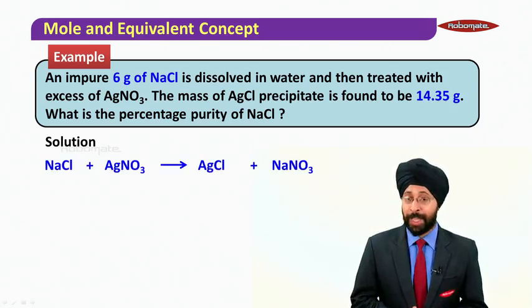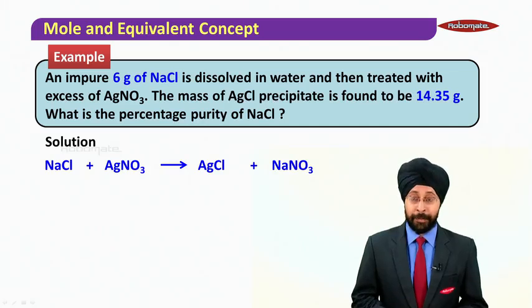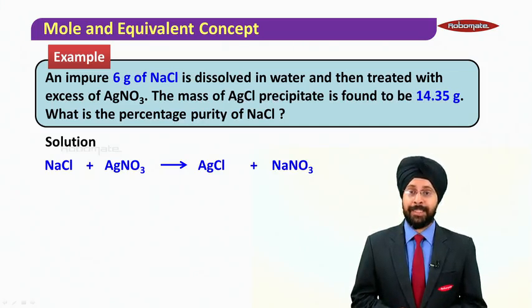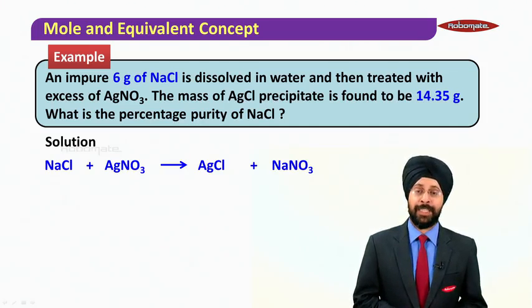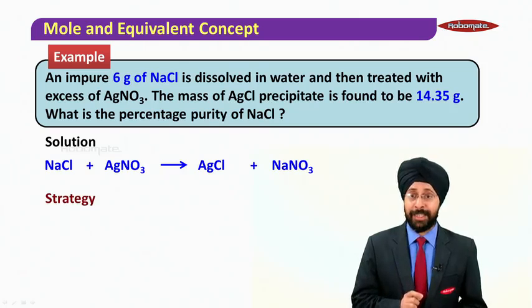Now in this case, first we will write the reaction. It is a double displacement reaction. NaCl plus silver nitrate gives you AgCl plus NaNO3. And now we will first develop the strategy here.